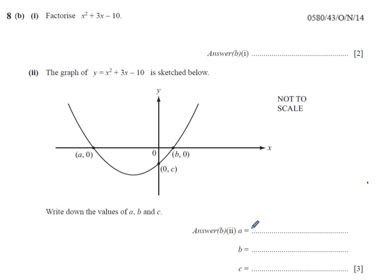We are asked to factorise the expression x² + 3x - 10. In order to factorise this expression, we must get two brackets. This is a type of quadratic factorisation using two brackets.